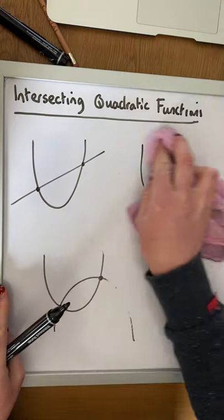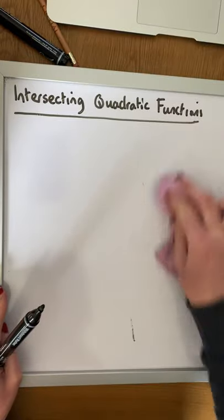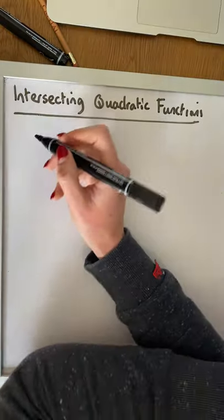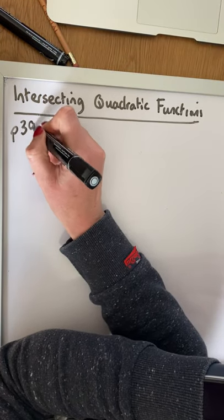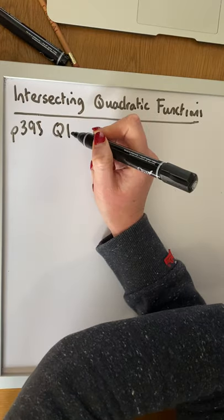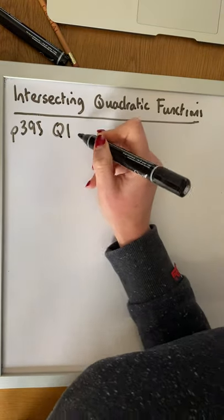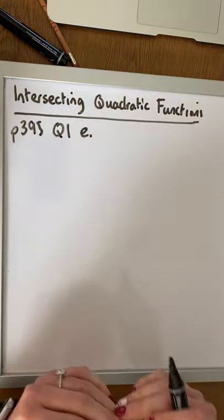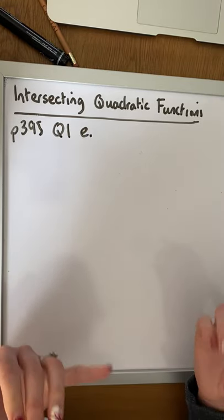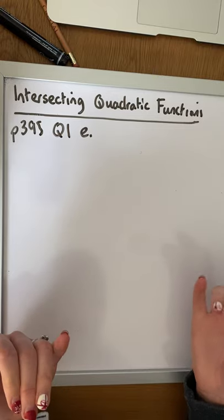So let's look at how we solve one example of these questions, both graphically and algebraically. So the question I'm taking is from page 395 of our book, and we're going to look at question one, part E. Alright, so I'm going to solve it algebraically first, and then we're going to look at solving it graphically.